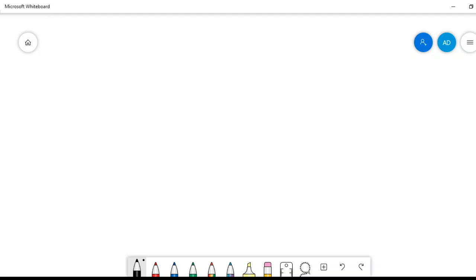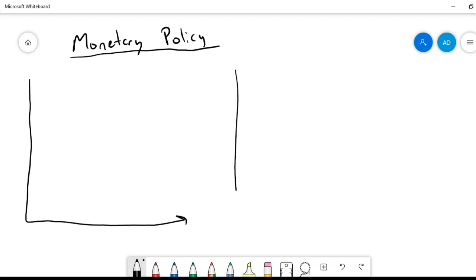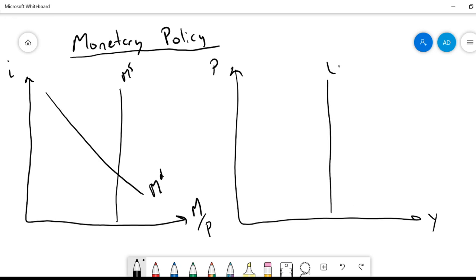We talked about fiscal policy, let's talk about monetary policy which is a little more complicated. In particular, monetary policy has a bit more of a transmission mechanism than fiscal policy. So let's start off by drawing the market for money. I've got money supply, money demand, and now I've also got my aggregate demand and aggregate supply.